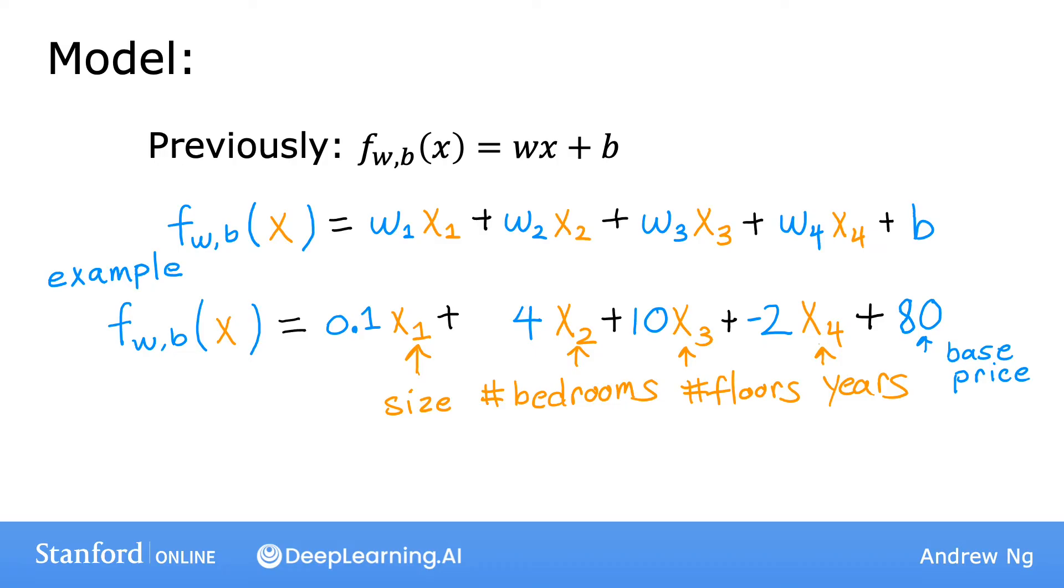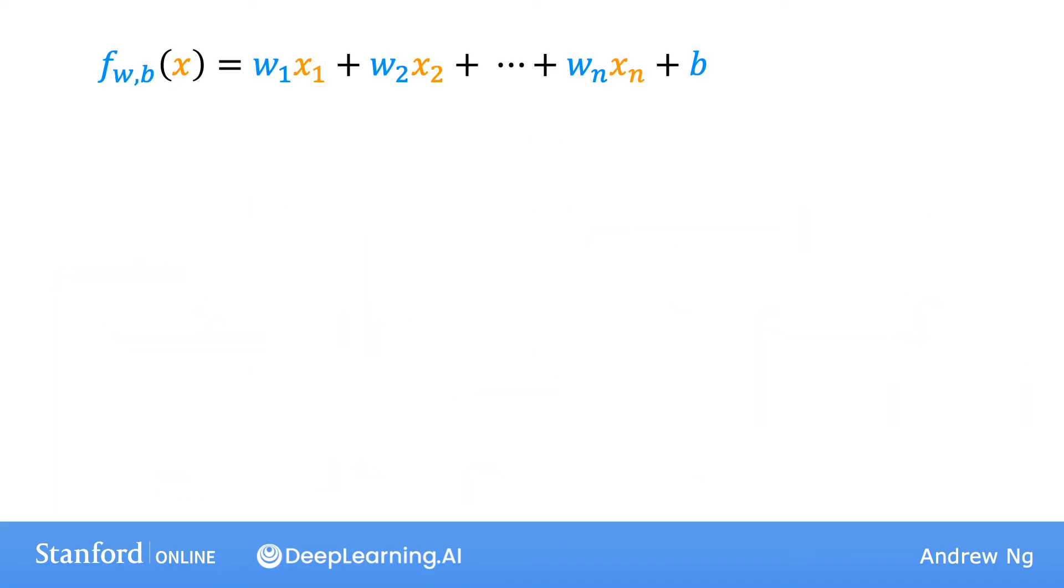And in general, if you have n features, then the model will look like this. Here again is the definition of the model with n features. What we're going to do next is introduce a little bit of notation to rewrite this expression in a simpler but equivalent way.